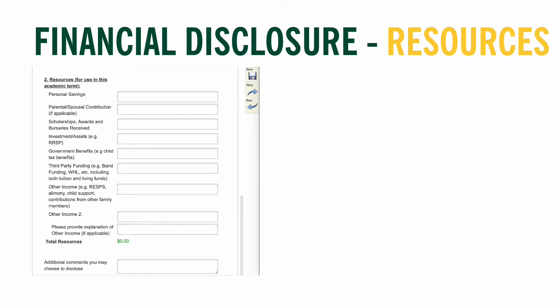Under Resources, indicate any resources you currently know you have to contribute towards one term of your education. If a section does not pertain to you, leave it blank. Personal savings should include only the amount you plan to use for one term — for example, if you have $3,000 saved but plan to only use $500 for the fall term, only indicate $500. This same process applies to RESPs — if your parents have $10,000 in RESPs but plan to use $2,000 for the term, only indicate $2,000.